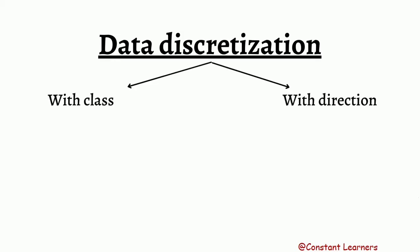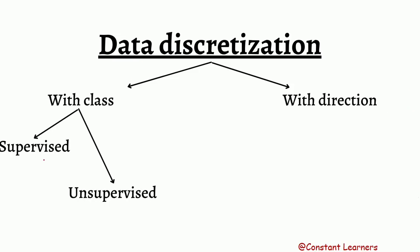There are two types of data discretization. With respect to class, it is divided into supervised discretization and unsupervised discretization. When we have the class information, we call it supervised discretization. When we do not have the class information, we call it unsupervised discretization.